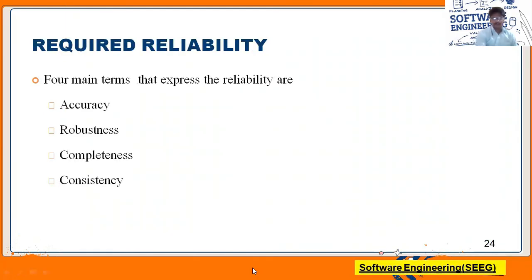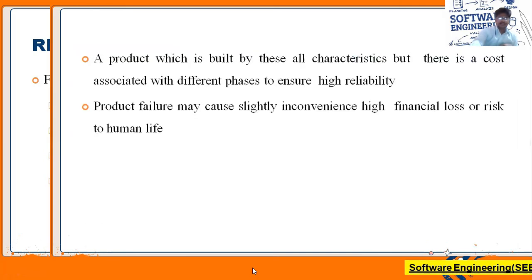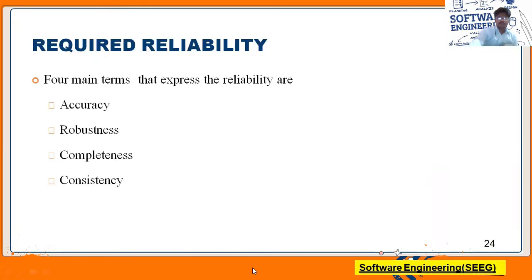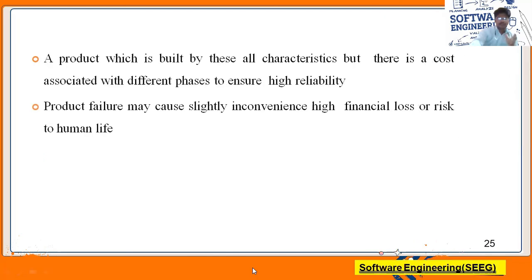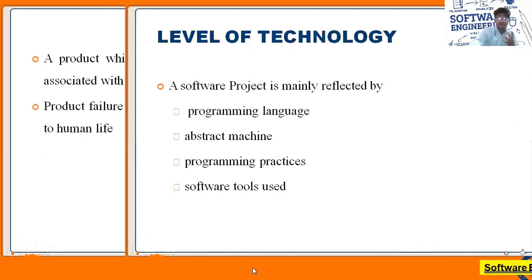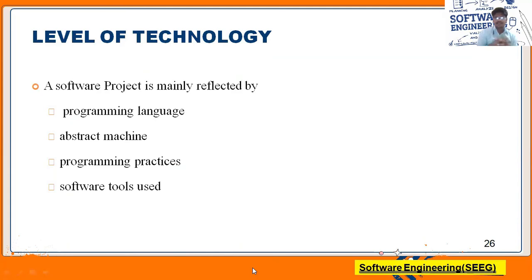The next factor influencing software cost estimation is required reliability. We already saw programmer ability; now we look at required reliability. Reliability is expressed in four main terms: accuracy, robustness, completeness, and consistency. These are the four major terms in which the reliability of the delivered software is assessed.